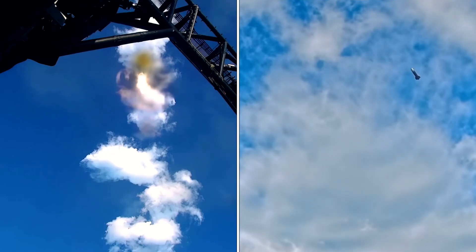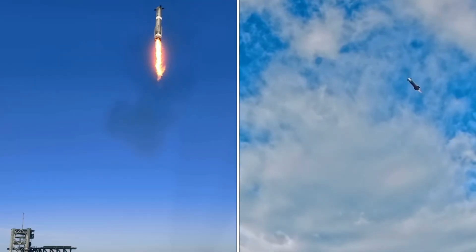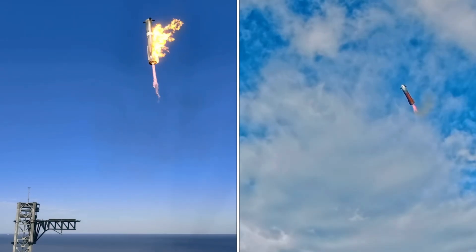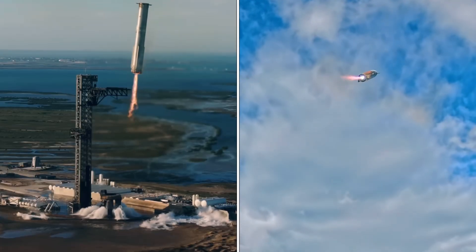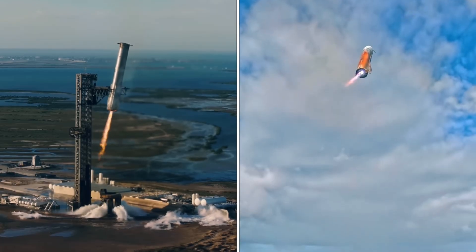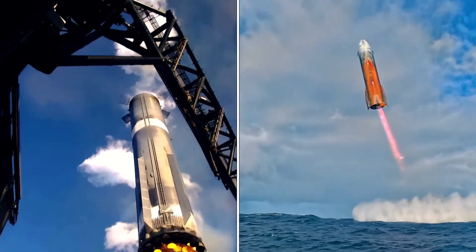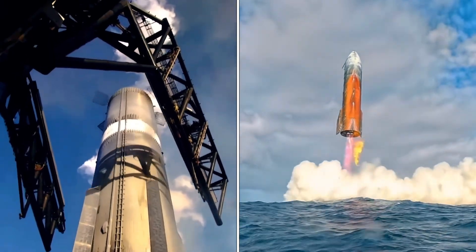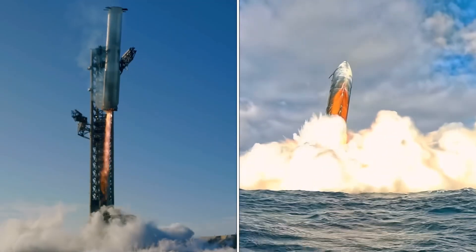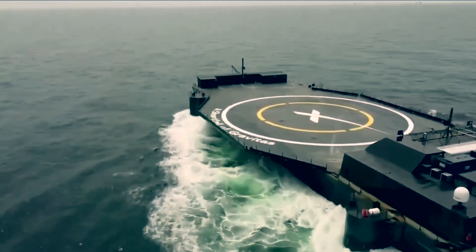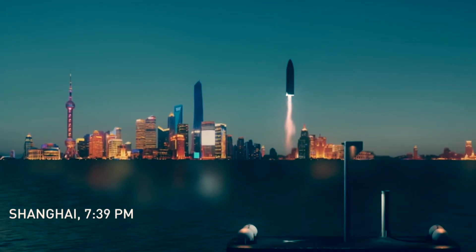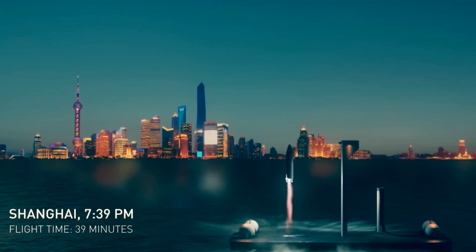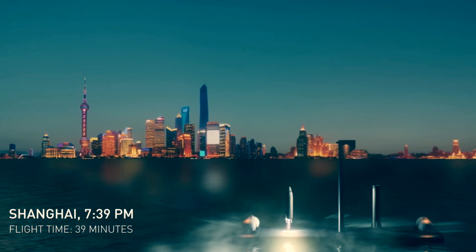For SpaceX, the choice between RTLS and downrange is set by payload mass and target orbit, the recovery propellant margin, and operations, which includes the availability and placement of an autonomous spaceport drone ship, sea state and winds along the return corridor, and approved sonic boom windows at the landing zones. Truly amazing to think of how far we've come in terms of space tech in the last several years, isn't it?